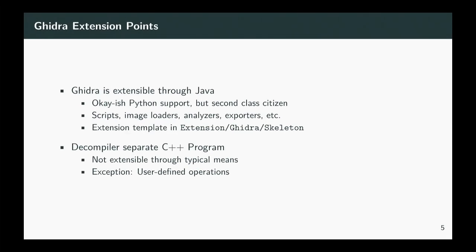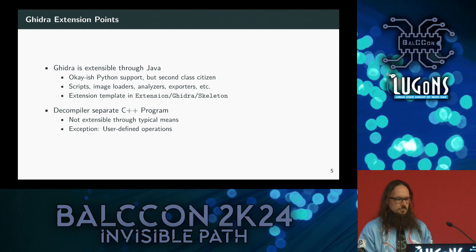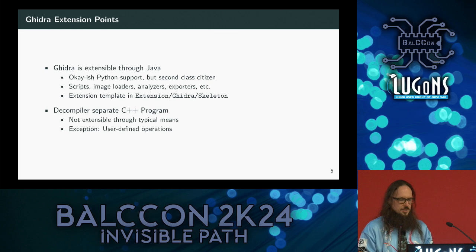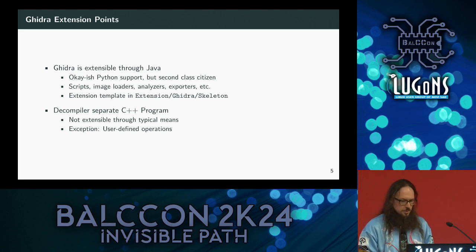Because the decompiler is a separate C++ program, you don't really have a means to extend it through the Java API. There is one exception: if you define certain user-defined operations in the SLEIGH definitions and the P-code, the decompiler will call back to the Java UI where user-injected code will be executed and passed back to the decompiler. So in that special case you can modify some things, but you still won't get full control over everything.